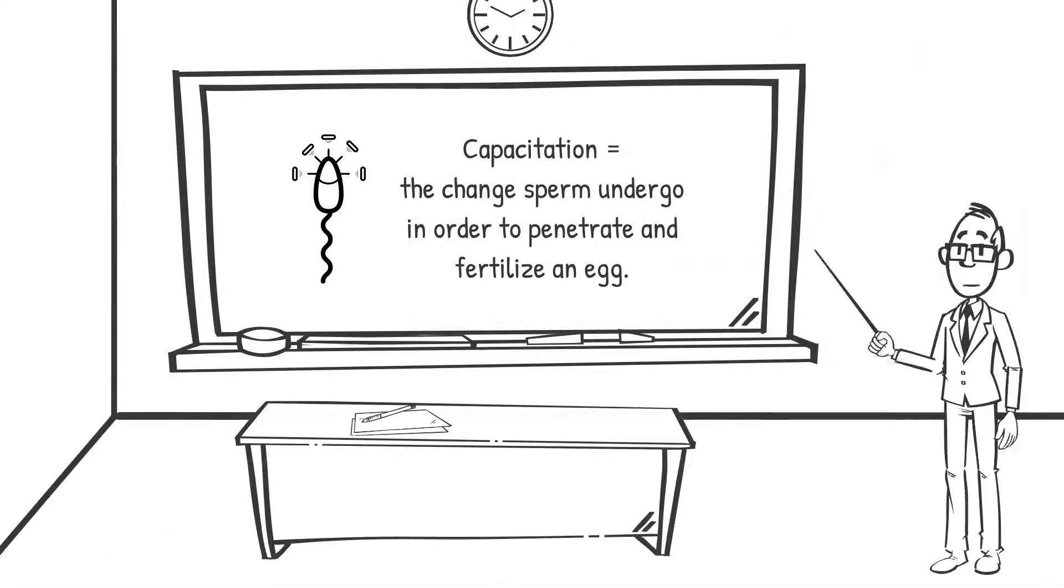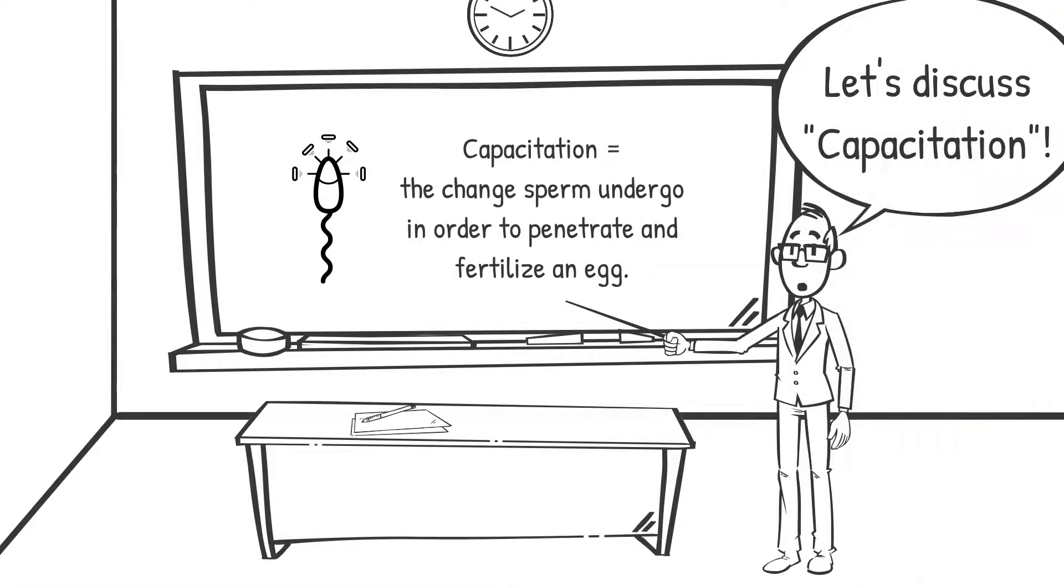Capacitation, generally speaking, is the change sperm undergo in the female reproductive tract that enables them to penetrate and fertilize an egg.